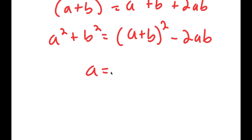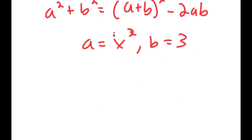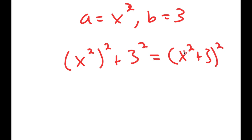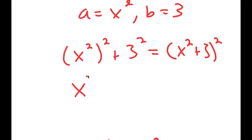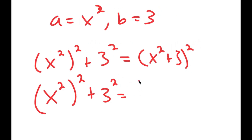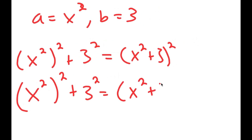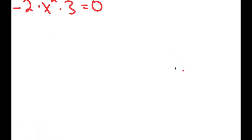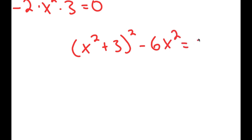So this means that a is equal to x squared and b is 3. Going back over here, I get x squared to the power of 2 plus 3 squared, which turns into x squared to the power of 2 plus 3 squared minus 2 times x squared times 3 is equal to 0.